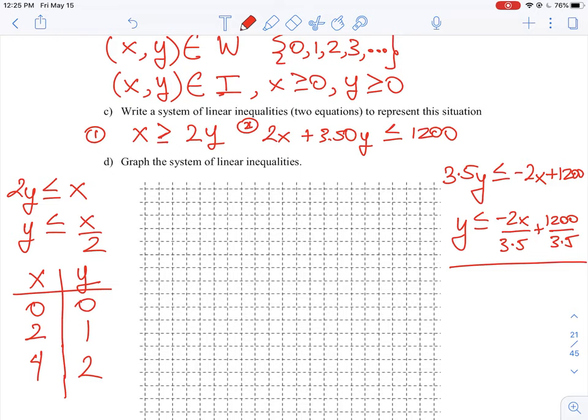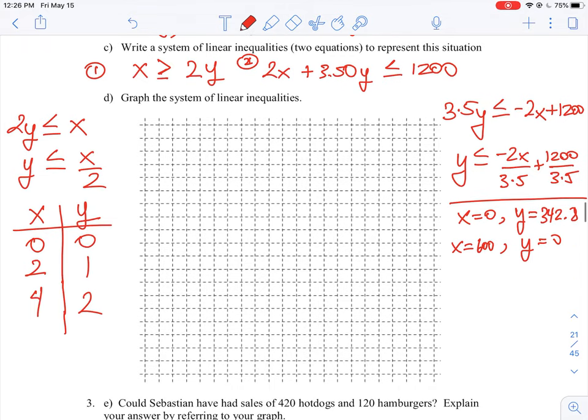So another thing that we could do is we could just say, what if we said x is equal to zero, what would y equal? And then what if we said, what if y is equal to zero, then what would x equal? So we could work this out on scrap paper. If you turn this out and you say x is equal to zero, and then you solve for what y would be, it would be equal to 1200 divided by 3.5. So that's going to be roughly 342.8. So that's one of our y coordinates. And then if y was equal to zero, we would have a value where it would be negative 1200 divided by 2, we would actually have 600. So these are kind of large numbers to plot on the graph.